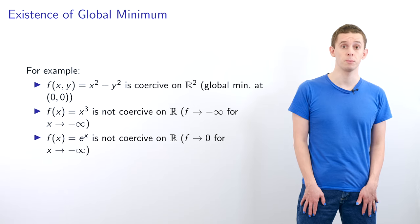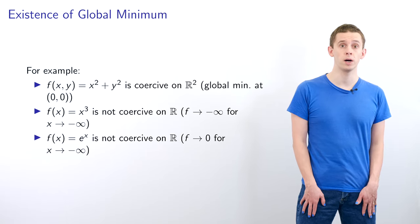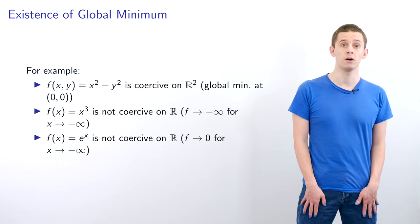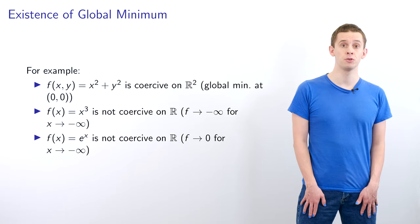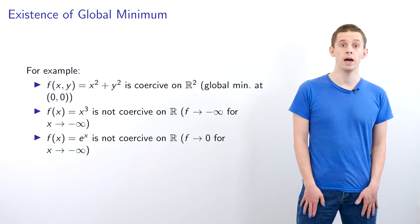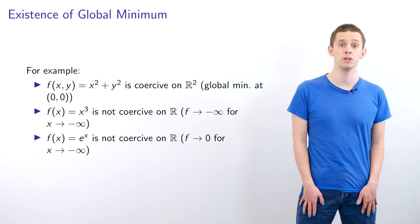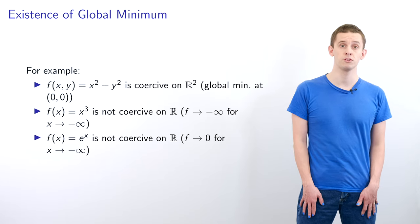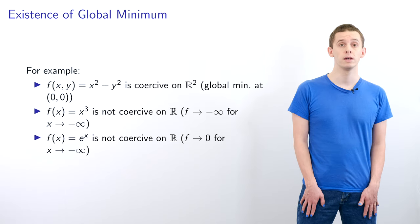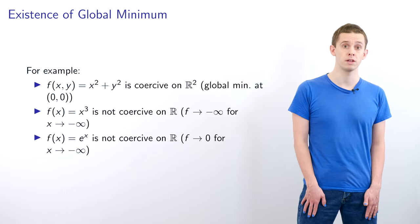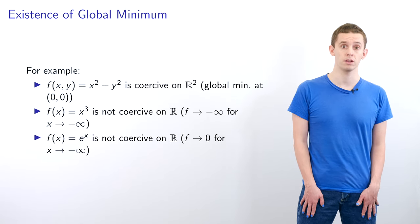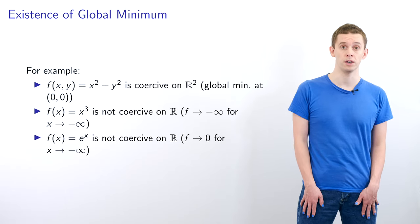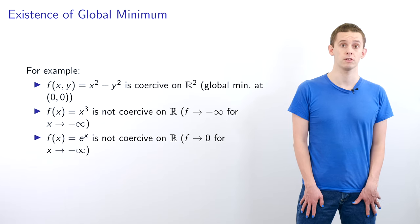Let's look at coercivity for a few different examples. The function f(x, y) = x² + y² is coercive on R², and using our previous results we can deduce that it has a global minimum — indeed this function has a global minimum at (0, 0). The function f(x) = x³ is not coercive on R, because f tends to minus infinity as x tends to minus infinity, and our definition of coercivity requires that the function tends to positive infinity whenever the norm of x gets large. The function f(x) = eˣ is also not coercive on R, because f tends to 0 as x tends to minus infinity.